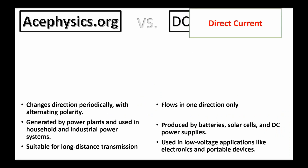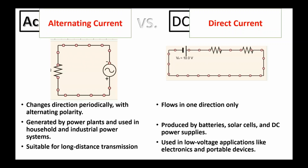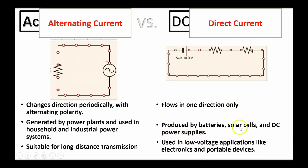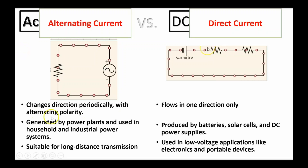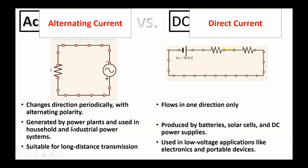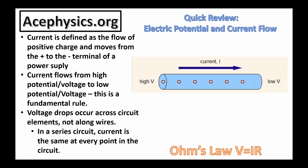Let's start by understanding the two main types of electric current: direct current and alternating current. Direct current flows in only one direction. It's produced by batteries, solar cells, and DC power supplies, and used in low-voltage applications like electronics and portable devices. Alternating current changes direction periodically with alternating polarity. It's generated by power plants and used in household and industrial power systems, and it's suitable for long-distance transmission. This lesson focuses on AC circuits.